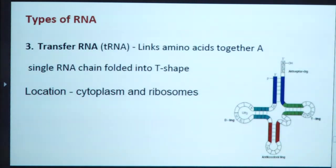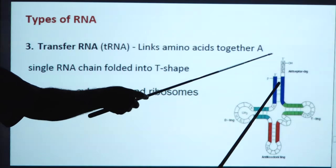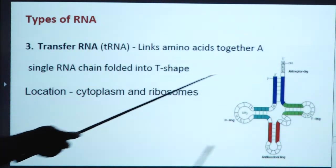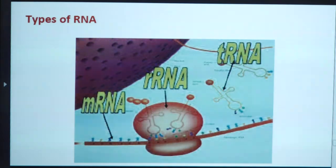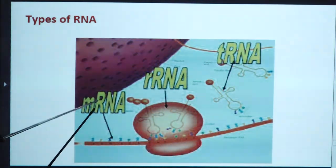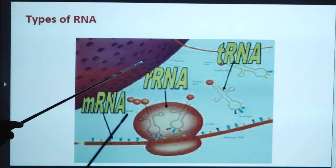Third is tRNA, known as transfer RNA. It links amino acids together; a single RNA chain folded into a T-shape. It is present in the cytoplasm and ribosomes. So we have three types of RNA: mRNA (messenger RNA), rRNA (ribosomal RNA), and tRNA (transfer RNA).